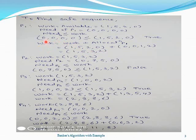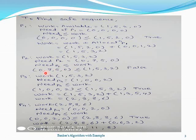We now consider this same work value [1, 5, 3, 2] for checking the condition for process P2. The need value of P2 is [0, 7, 5, 0] as calculated in the previous video. We compare need of P2 with the current work. The condition fails: 0 ≤ 1 is true for R1, but for R2, 7 is not less than or equal to 5. So the condition is false — we cannot allocate resources to process P2. Process P2 has to wait. We skip P2 and check process P3.